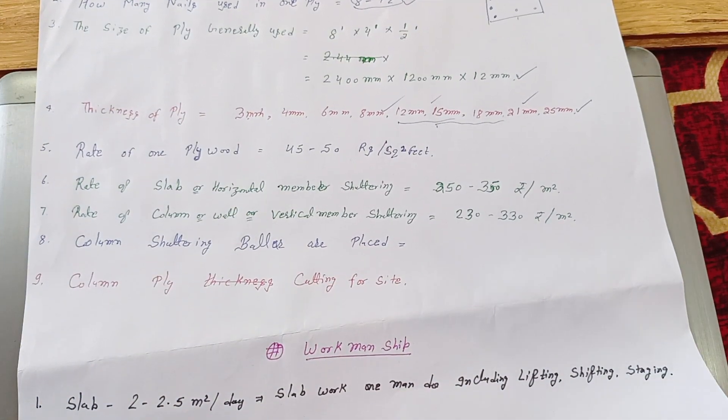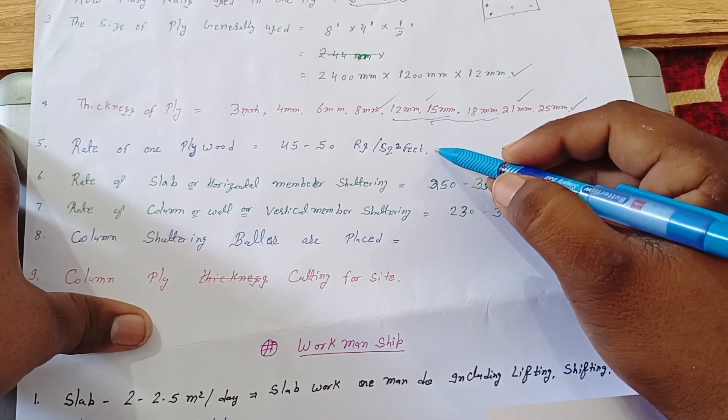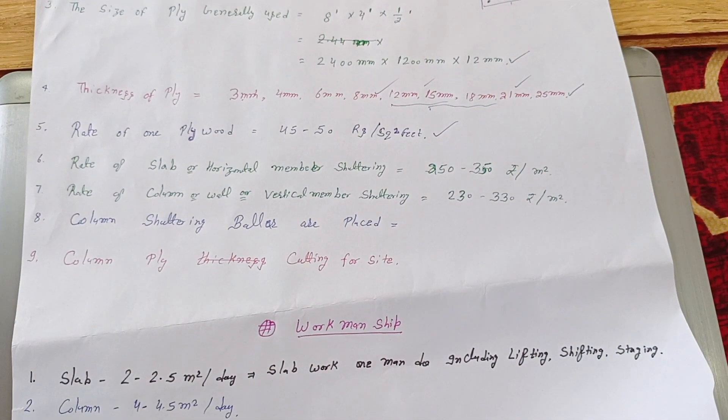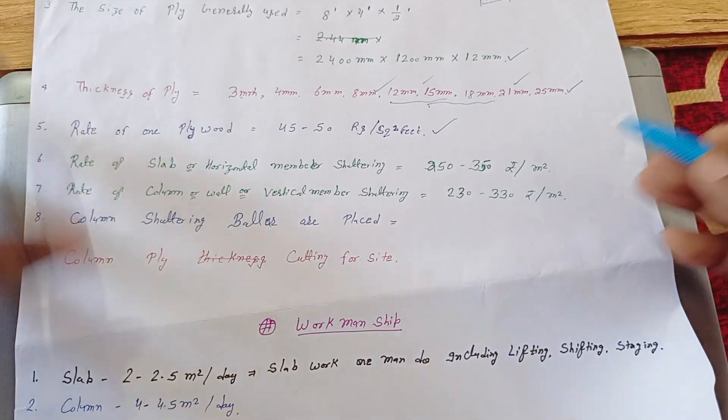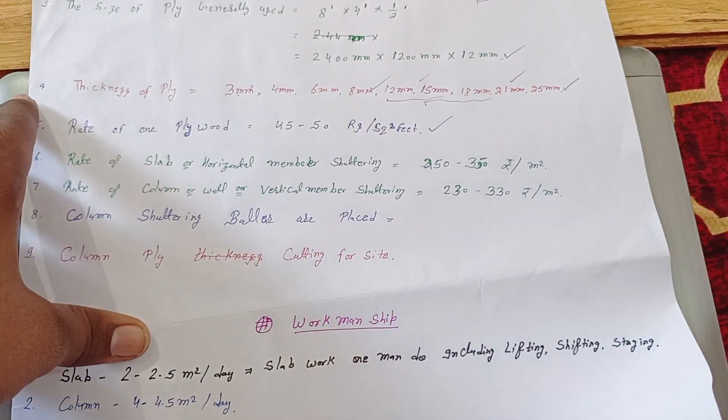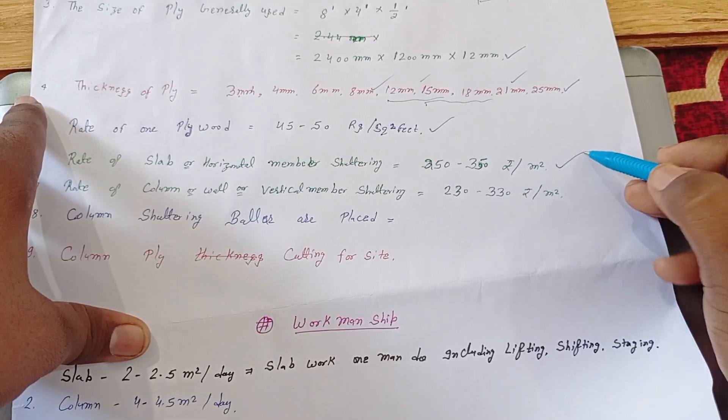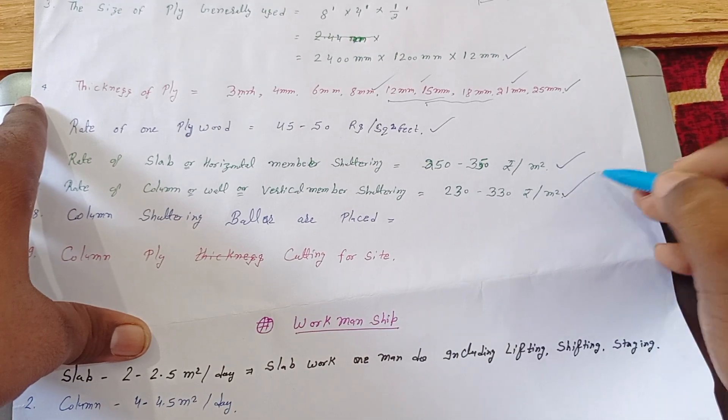They can ask rate of one ply is generally 40 to 50 rupees per square feet. We can say that thickness of ply is very about the rate of the ply. So rate of slab in horizontal member generally we can do that as a petty contract or generally we can work up shuttering. So rate of shuttering is generally used in both slab is equal to 250 to 350 rupees per square meter and rate of column on wall is generally 230 to 330 rupees per square meter.